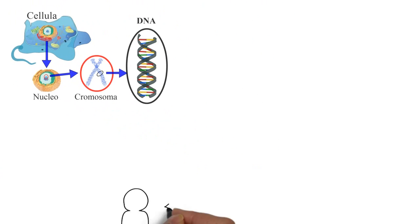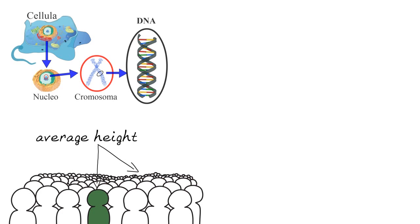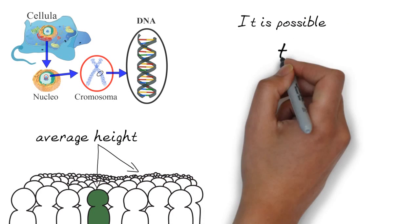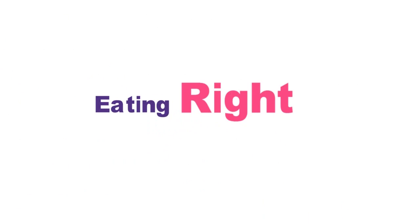This is the reason why some tall people have short parents. But overall, you are more than likely to be short if most of the people in your family are short on average. But it is possible to maximize your growth potential by eating right.